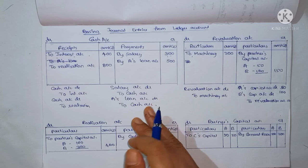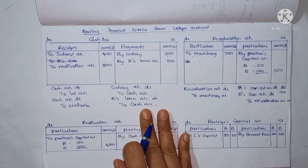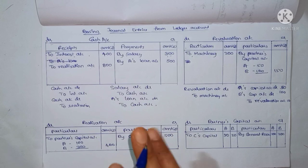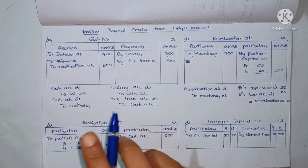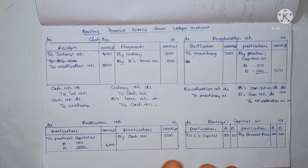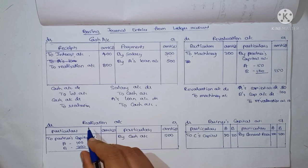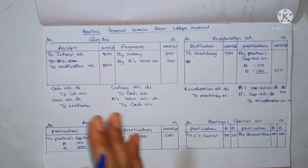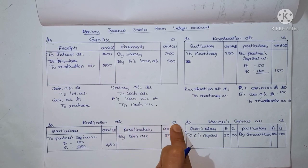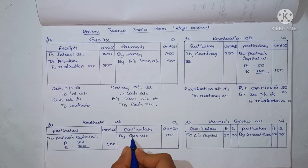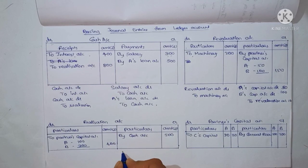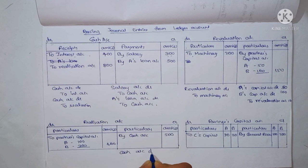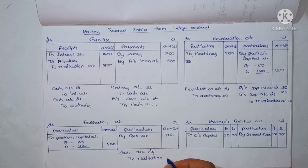Give the journal entry for realizing the assets in a dissolution of a partnership firm. The asset is transferred to the Realization Account. The Realization Account is credited and Cash Account is debited. So the entry is: Cash Account debit to Realization Account. Do you understand?